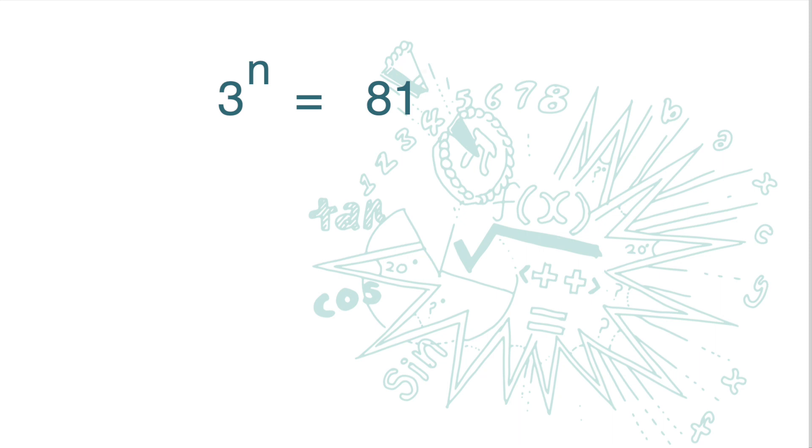Now, 81 is 3 times 3 times 3 times 3. So 81 is 3 to the power of 4. If you don't get this, you can use the repeated division method that we have just illustrated.